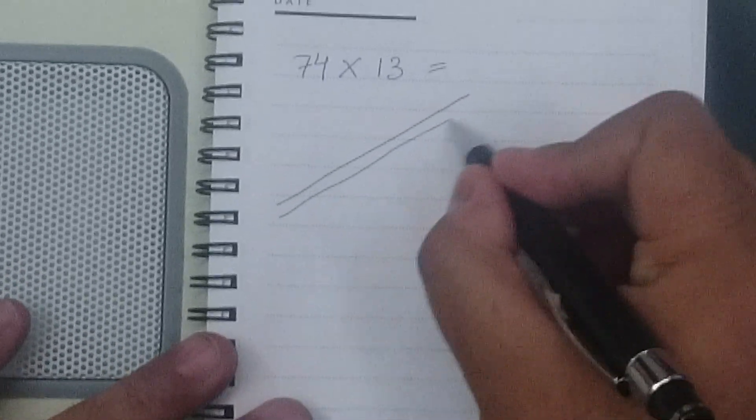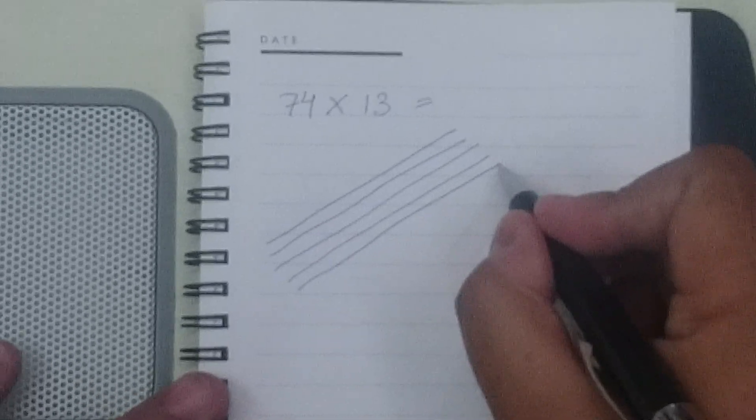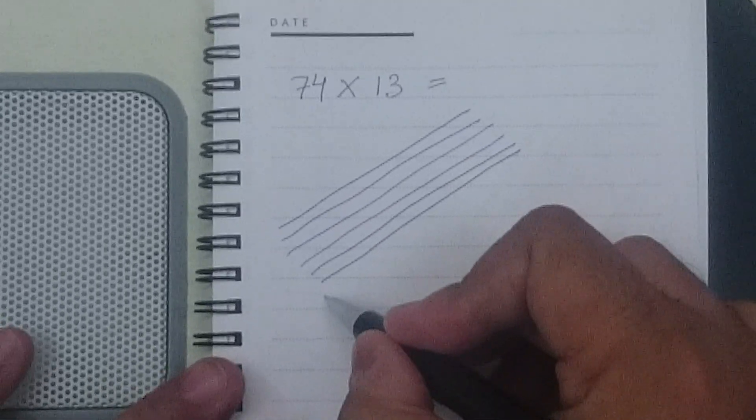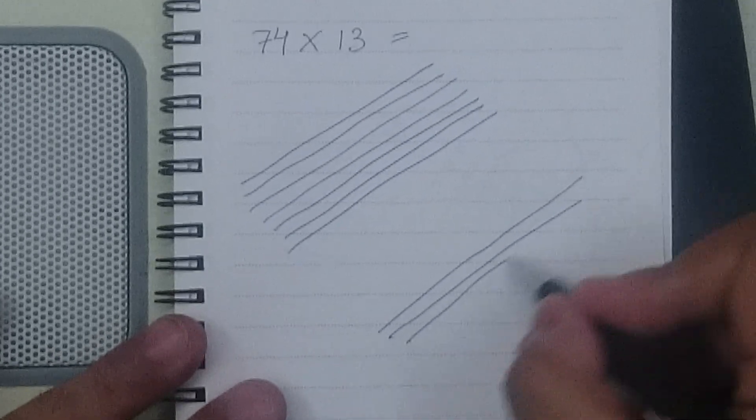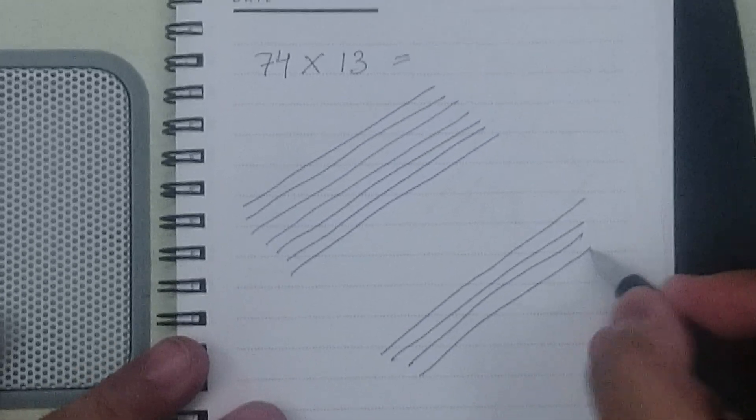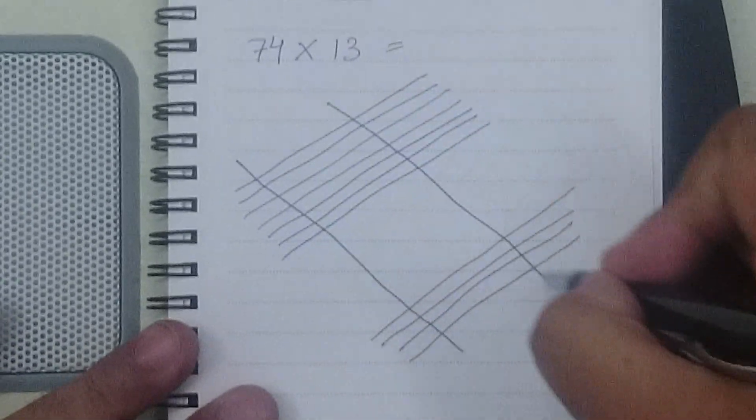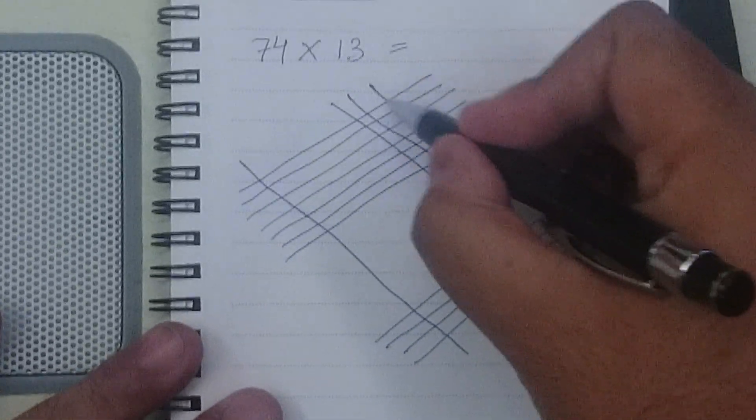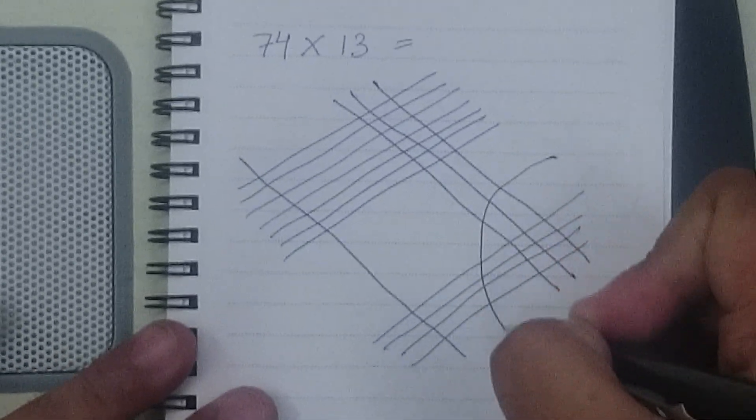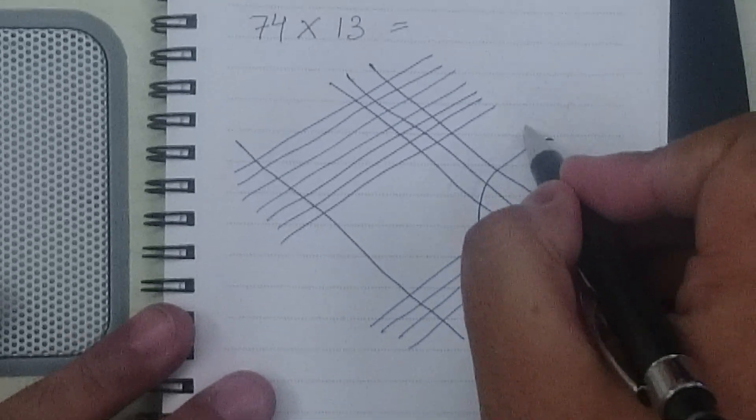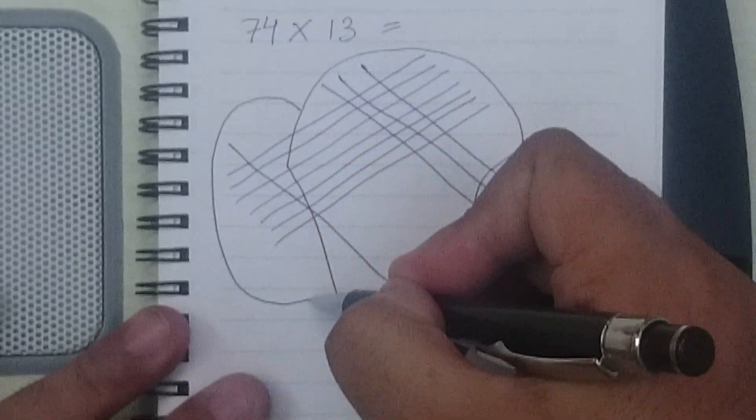1, 2, 3, 4, 5, 6, 7 and then 1, 2, 3, 4. So this is 74, now 13. 1, 2, 3. Again dividing into sections, 1st section, 2nd section and 3rd section.